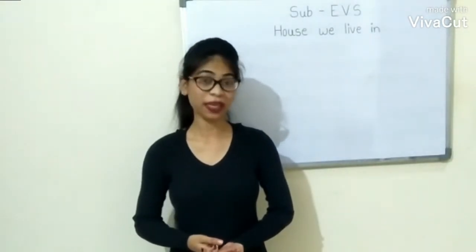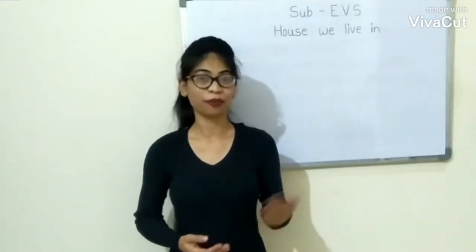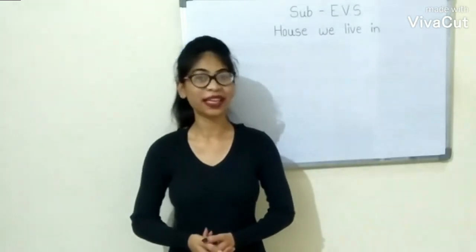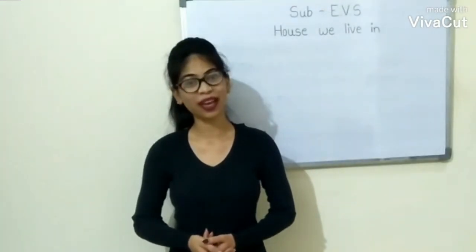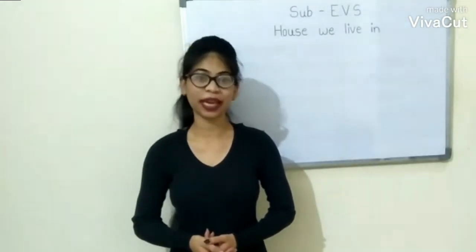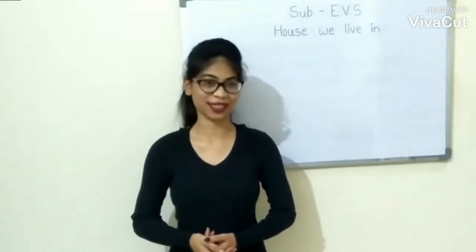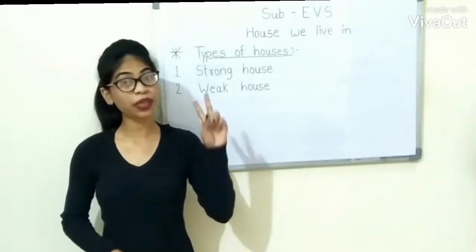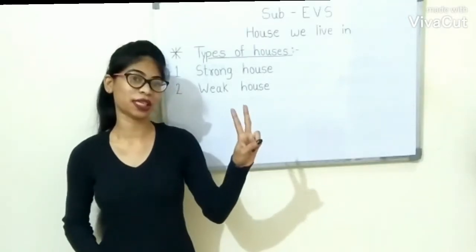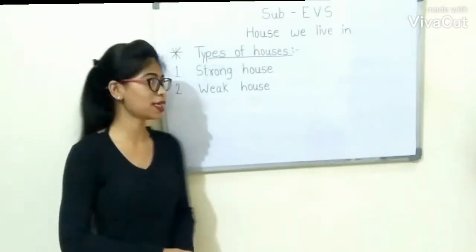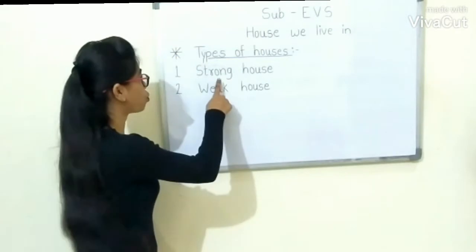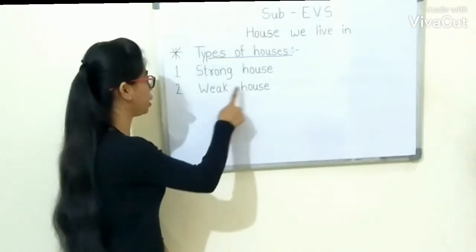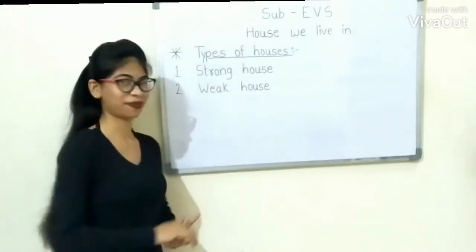Some people live in flats and bungalows. Now let us have a look at different types of houses. There are mainly two types of houses. First is strong house. Second is weak house.